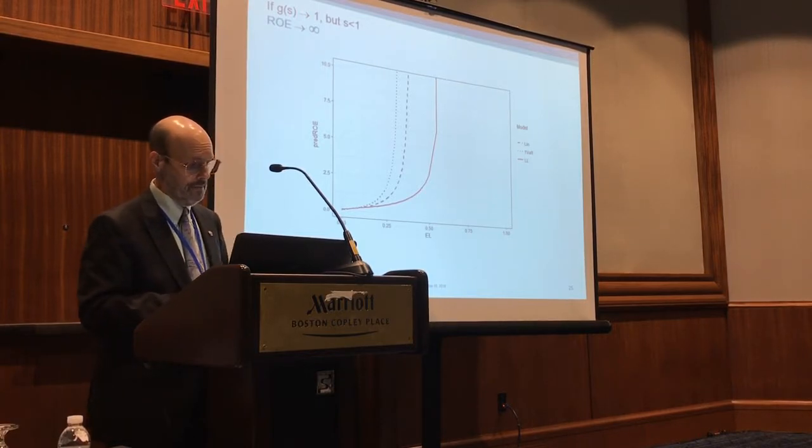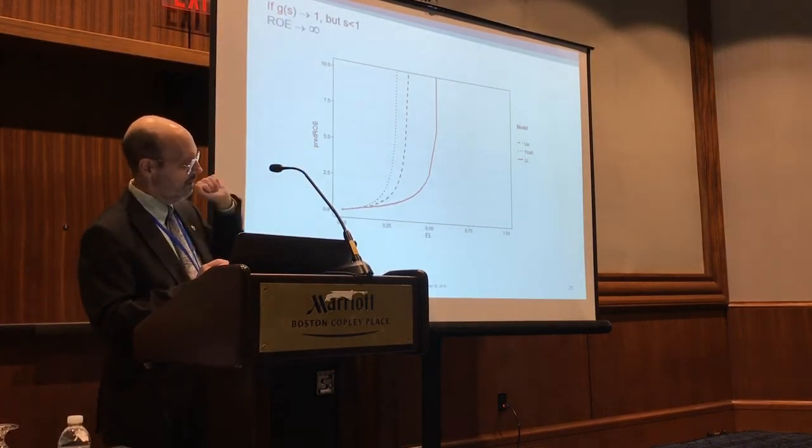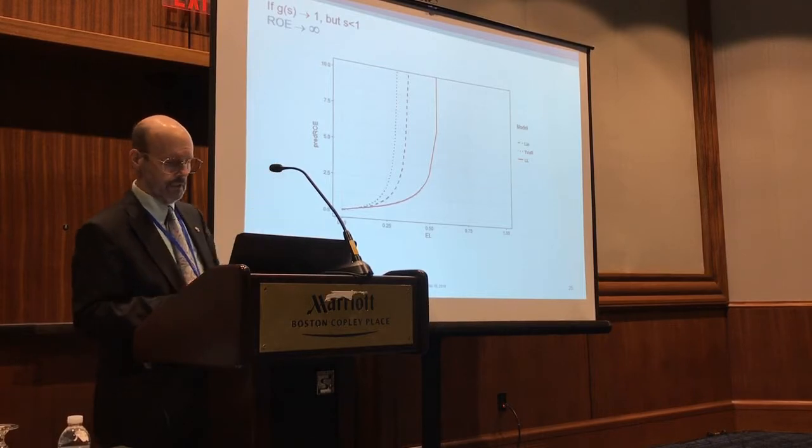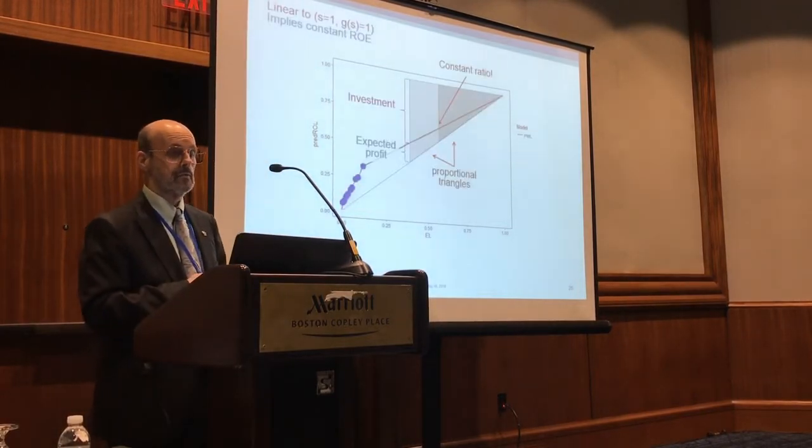And if you think about it, that piecewise linear sort of did that. We went from some point and then we did a straight shot to a one-to-one. We didn't go up and then cap, we took a diagonal. Now let's look at that and see what that means.